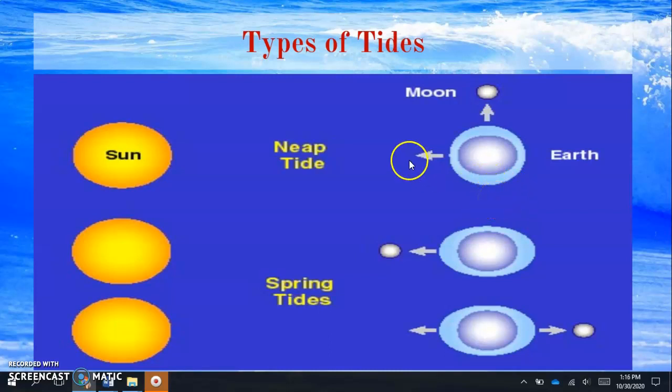And when this happens, you've got the gravity of the sun and the moon working opposite each other. So in this instance, we would have a lower high tide and a higher low tide. So the differences between the tides would not be as great because really the sun and the moon's gravity are working against each other.